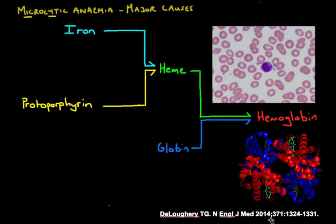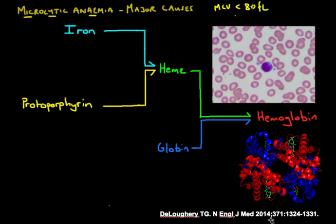As a quick recap — microcytic anemia: the word 'micro' means small, 'cytic' or 'cytos' refers to cells, in this case red blood cells. So microcytic anemia means an anemia characterized by small red blood cells. We define these using the mean cell volume (MCV), which is normally between 80 and 96 — some remember 80 to 100 — and in adults, an MCV less than 80 femtoliters constitutes microcytosis.